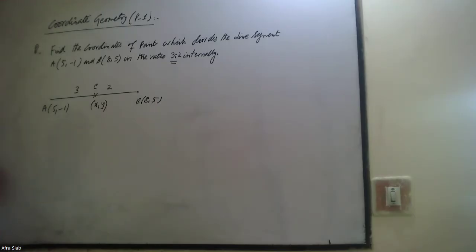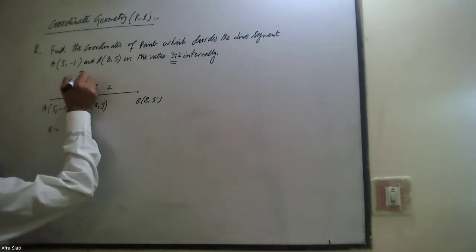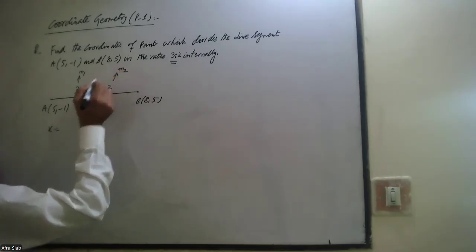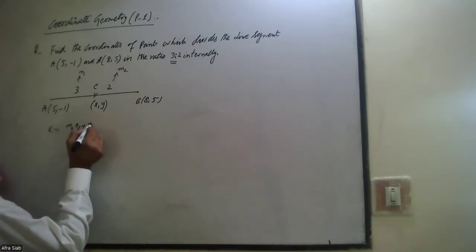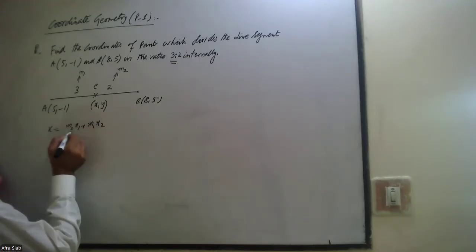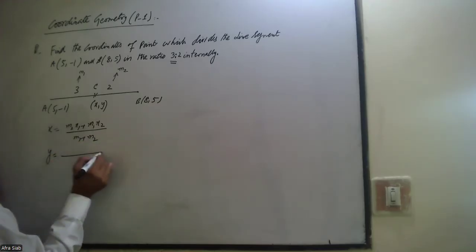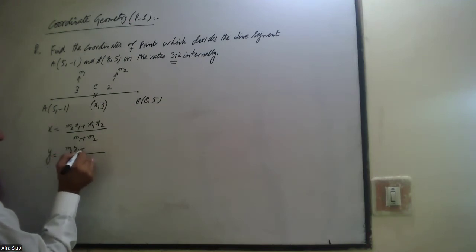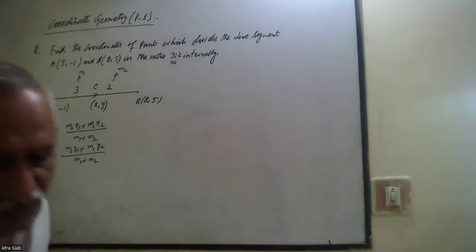We know that when a point divides a segment internally, if m1 and m2 are the ratio values, then the x-coordinate is equal to (m2·x1 + m1·x2) divided by (m1 + m2), and the y-coordinate is equal to (m2·y1 + m1·y2) divided by (m1 + m2). This is the section formula for finding the coordinates x and y.